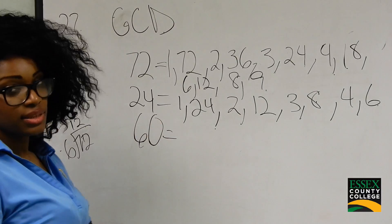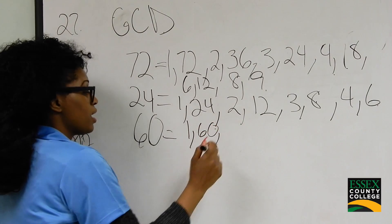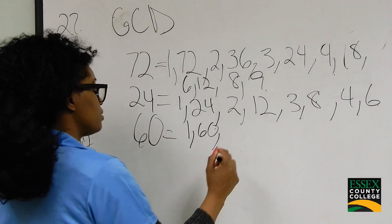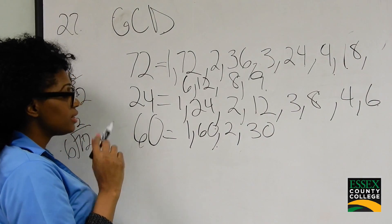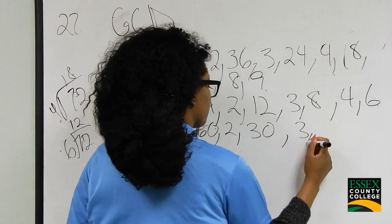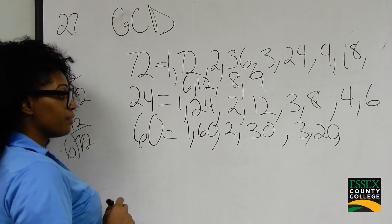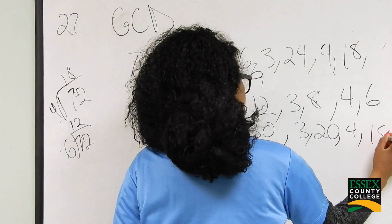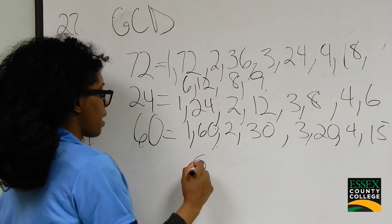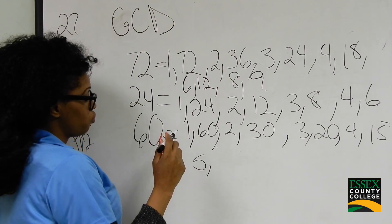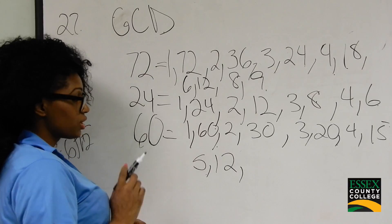Now we move on to 60. 60 divided by 1 is 60, so 1 and 60 are factors. Can 2 go into 60? Yes — 2 and 30 are factors of 60. 3 and 20 are factors of 60. Can 4 be divided into 60? Yes — 4 and 15 are factors of 60. Can 5 go into 60? Yes — 5 and 12 are factors of 60.